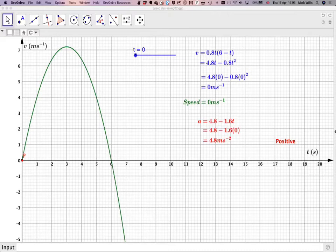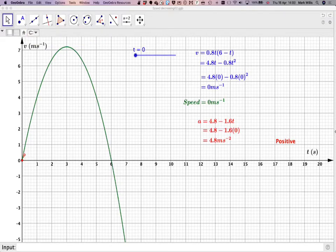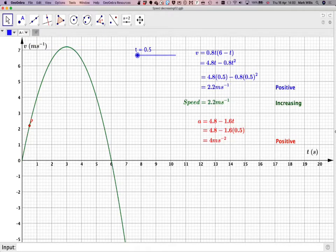We're going to move this slider along. At the beginning, the acceleration is positive, but there is no speed. Let's have a look at t equals 1. What we can see is that the velocity at that point is positive, and that the acceleration is also positive, and therefore that means that the speed will also be increasing.